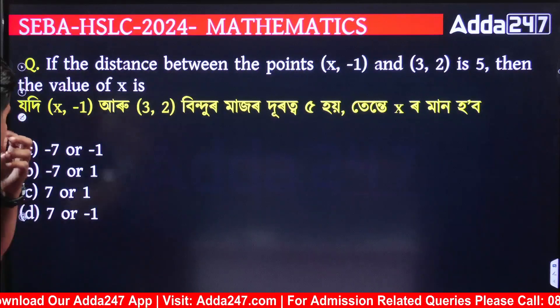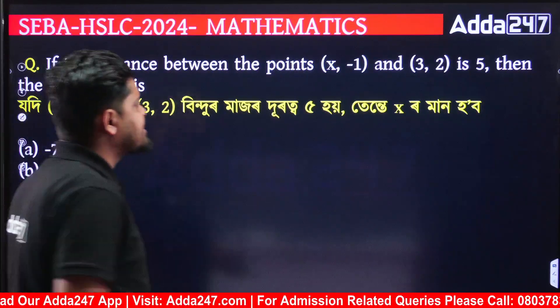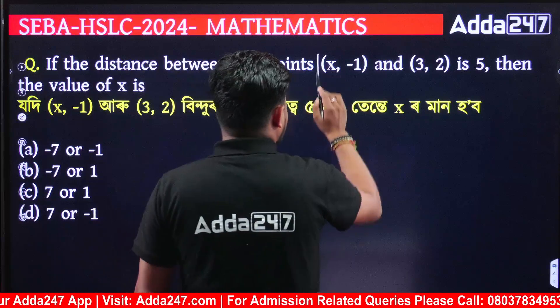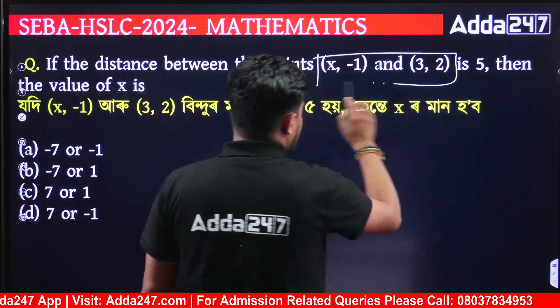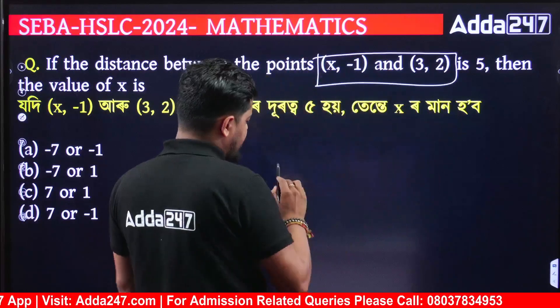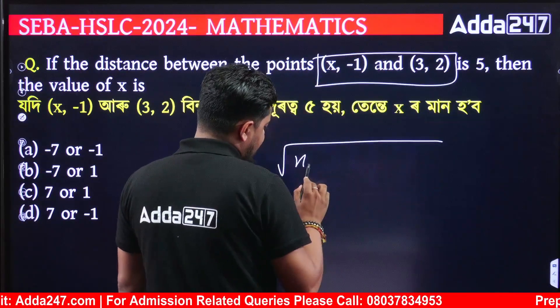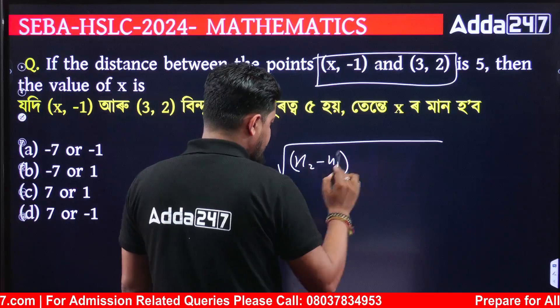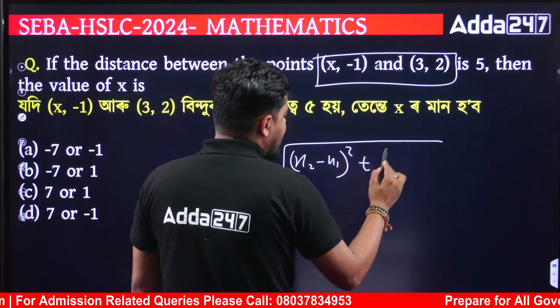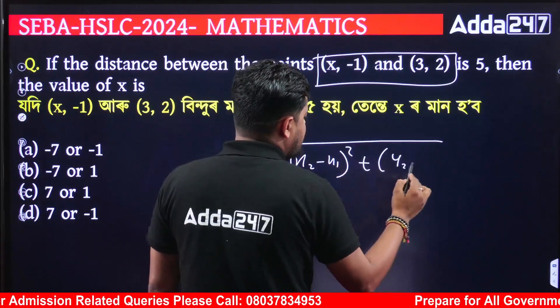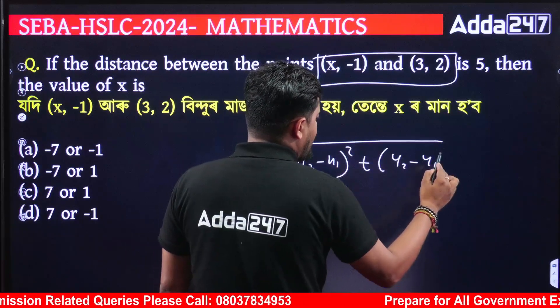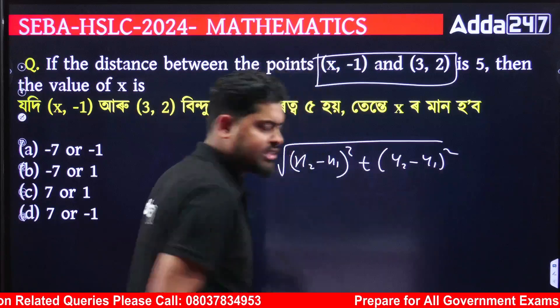The distance formula: distance is equal to the square root of (x2 minus x1) whole square plus (y2 minus y1) whole square.